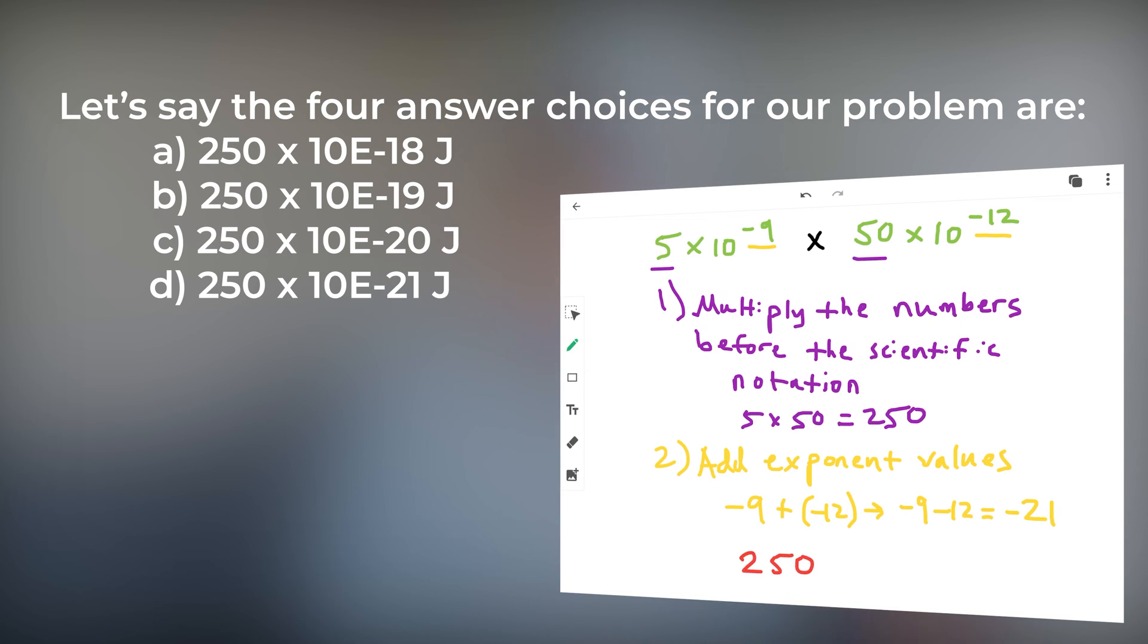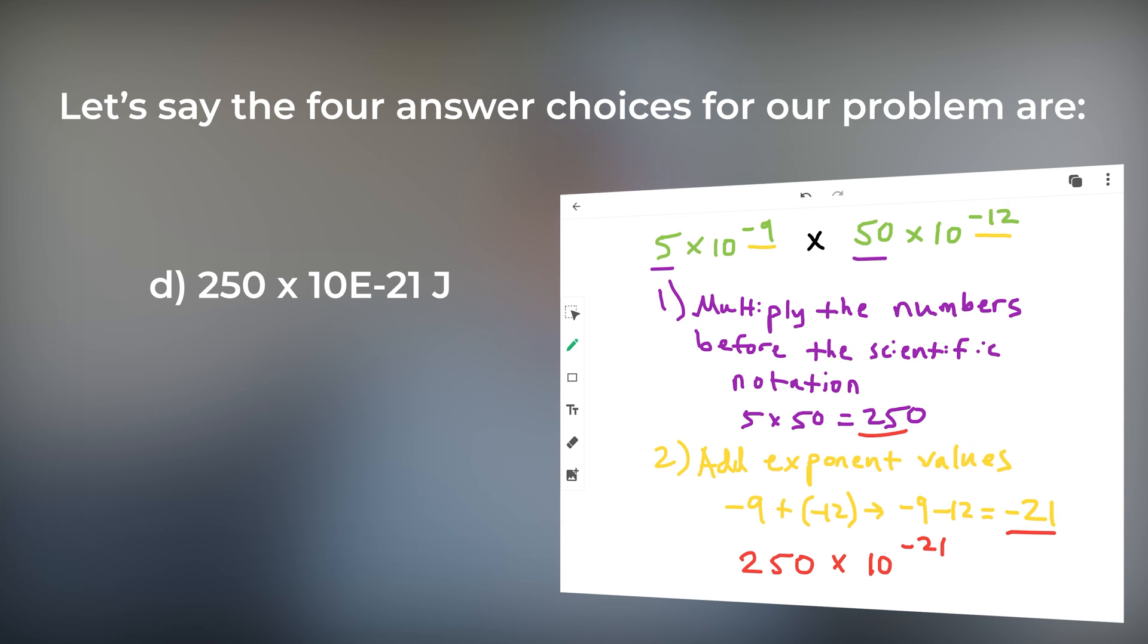When we piece together step 1, which was 250, and step 2, which was negative 21, we arrive at answer choice D. 250 times 10 to the negative 21.